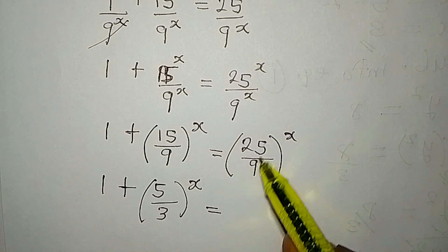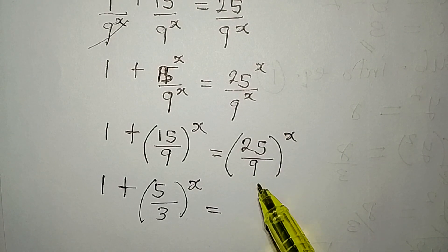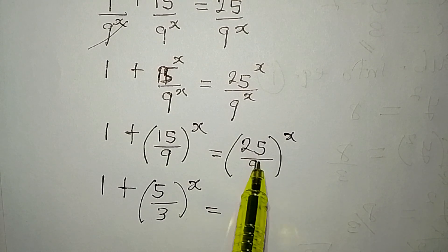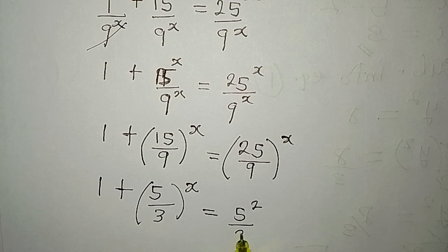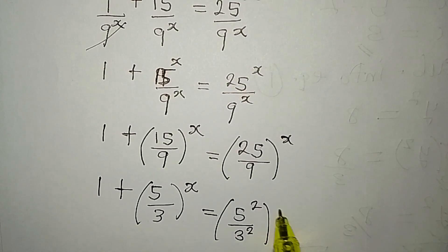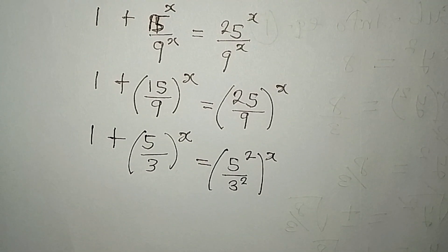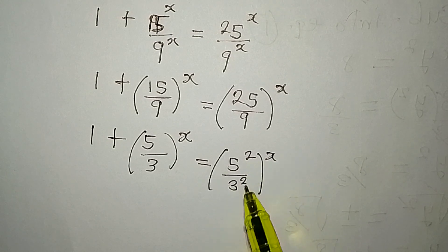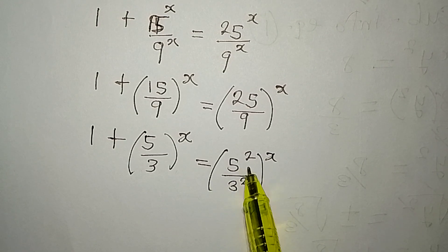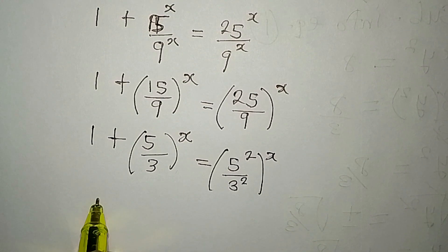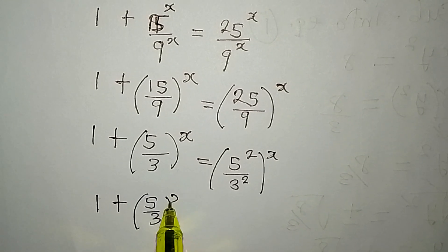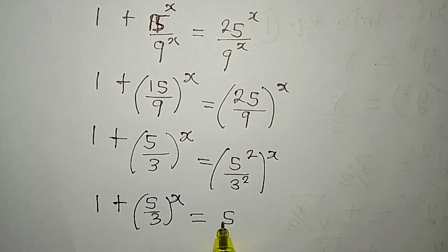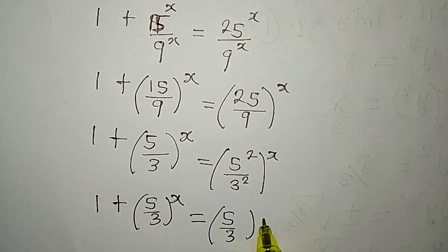These two will be raised to the power of x and it's equal to... Now I cannot reduce 25 over 9, since 3 cannot go into 25 and 9 cannot go as well. But I can write 25 as 5 squared, then 9 as 3 squared, and the power of x outside is still there. I will combine 5 and 3 and raise both of them to the power of 2. So this will now be 1 plus 5 over 3 to the power of x, equal to 5 over 3 to the power of 2x.